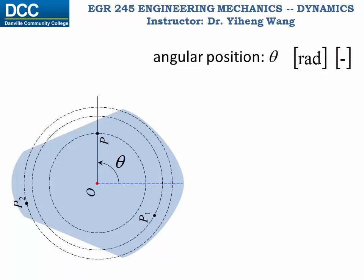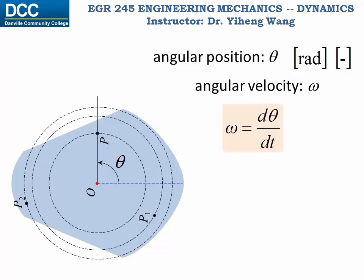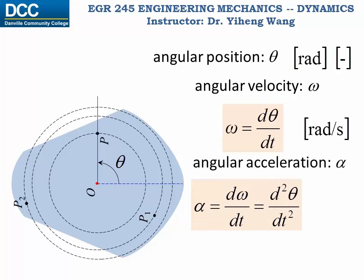The time derivative of angular position is angular velocity, omega, which equals d theta over dt, and it has the unit of radians per second. And angular acceleration, alpha, is defined as the time derivative of angular velocity, d omega over dt, or the second time derivative of angular position theta. It has the unit of radians per second squared.